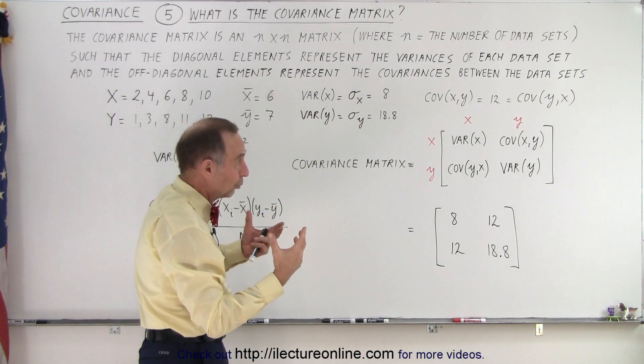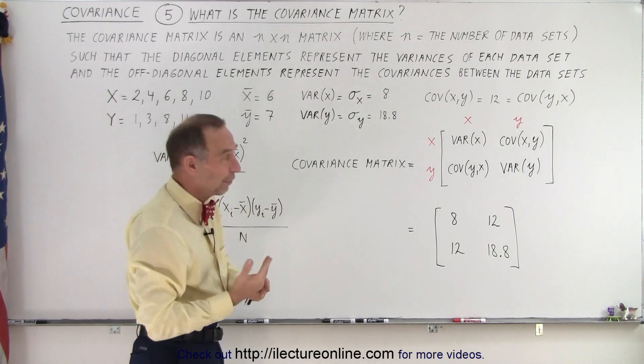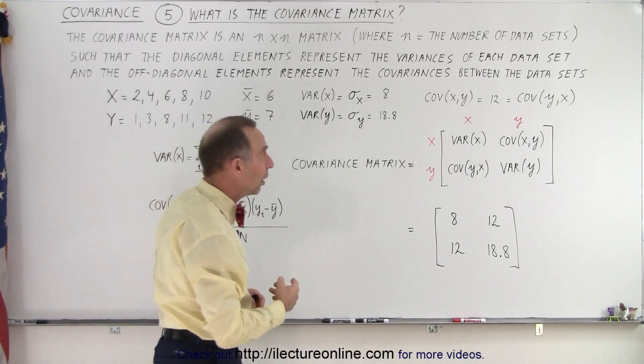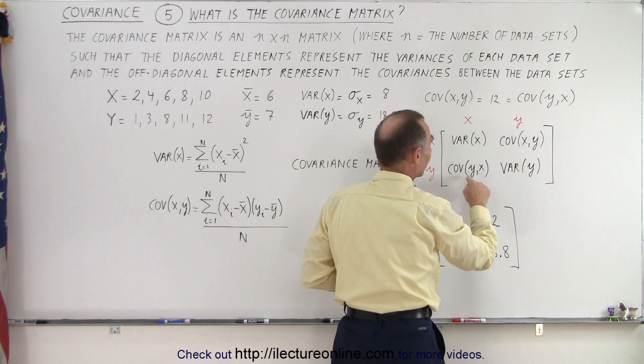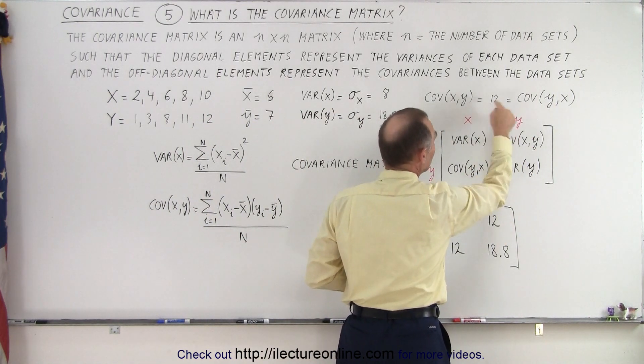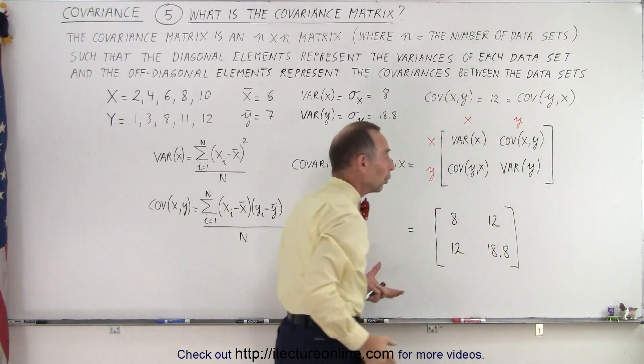Of course, since there's only two data sets, there can only be one covariance. The covariance of x and y is the same as the covariance of y and x - these are simply equal to one another. In this case, they're both equal to 12.